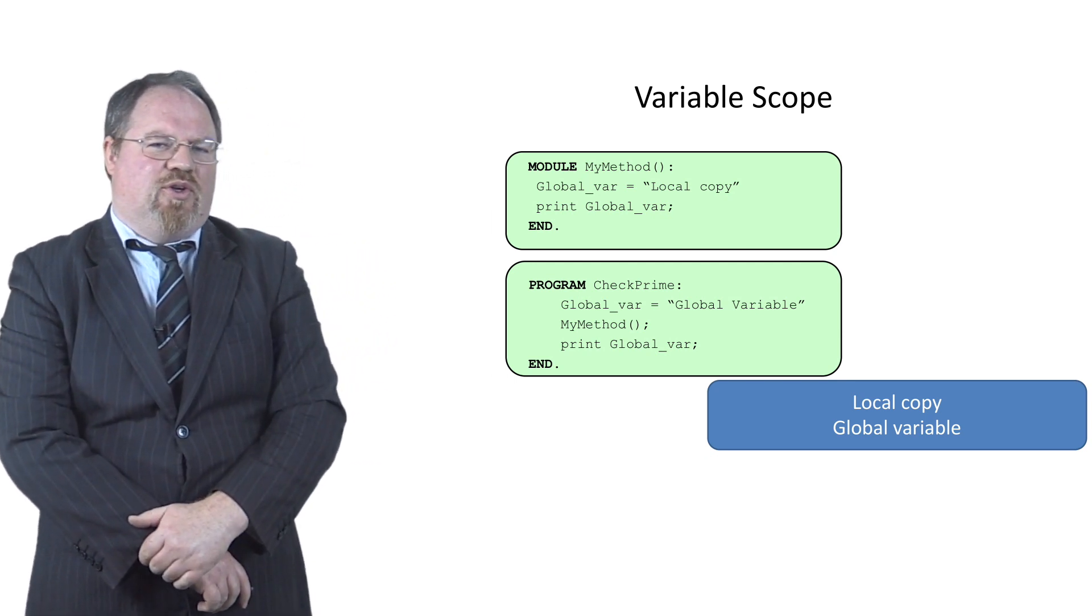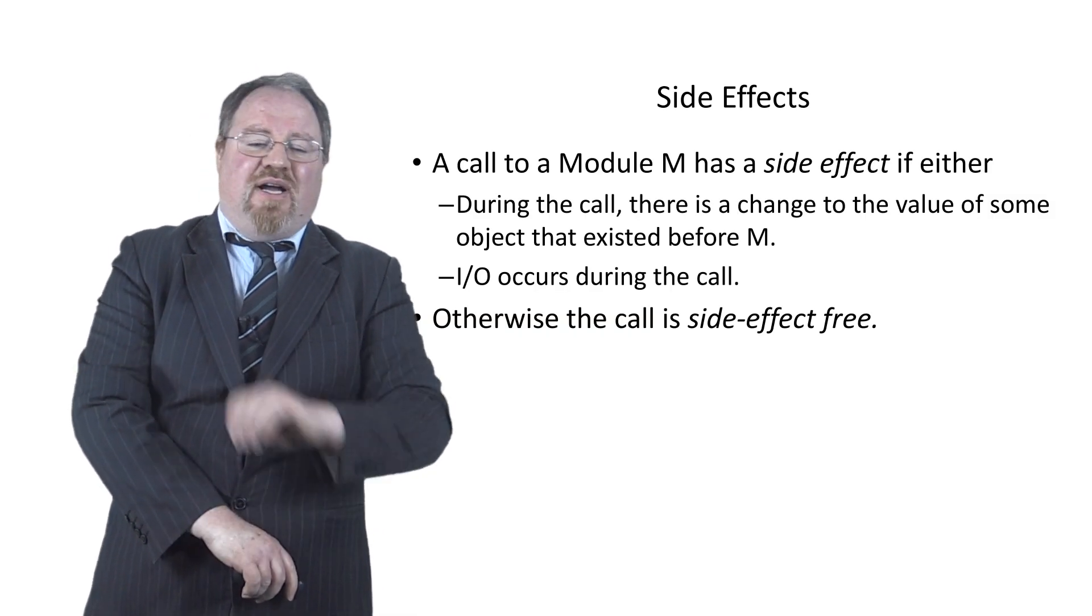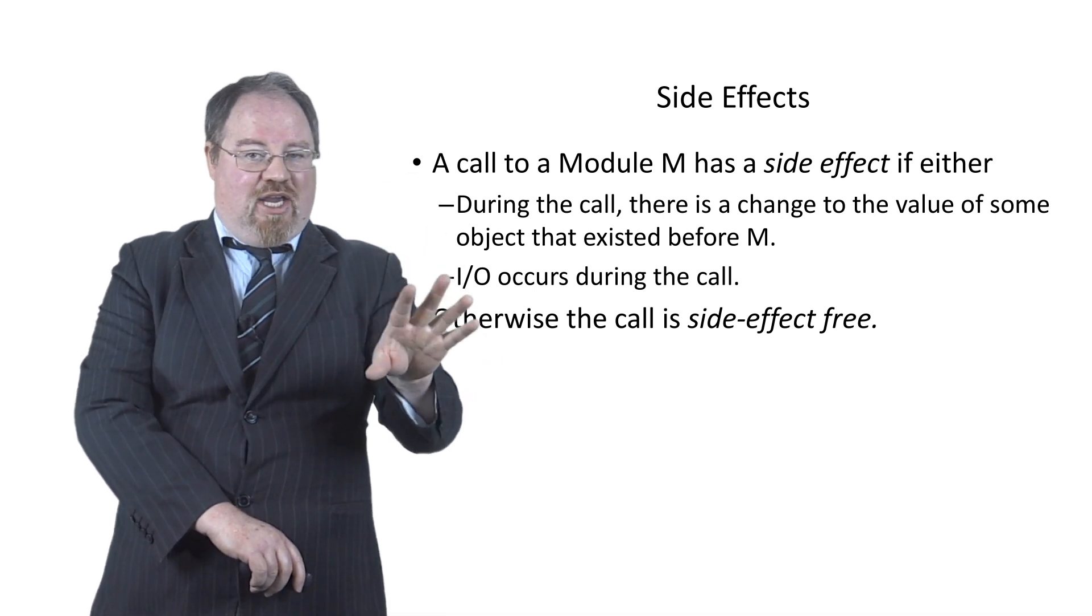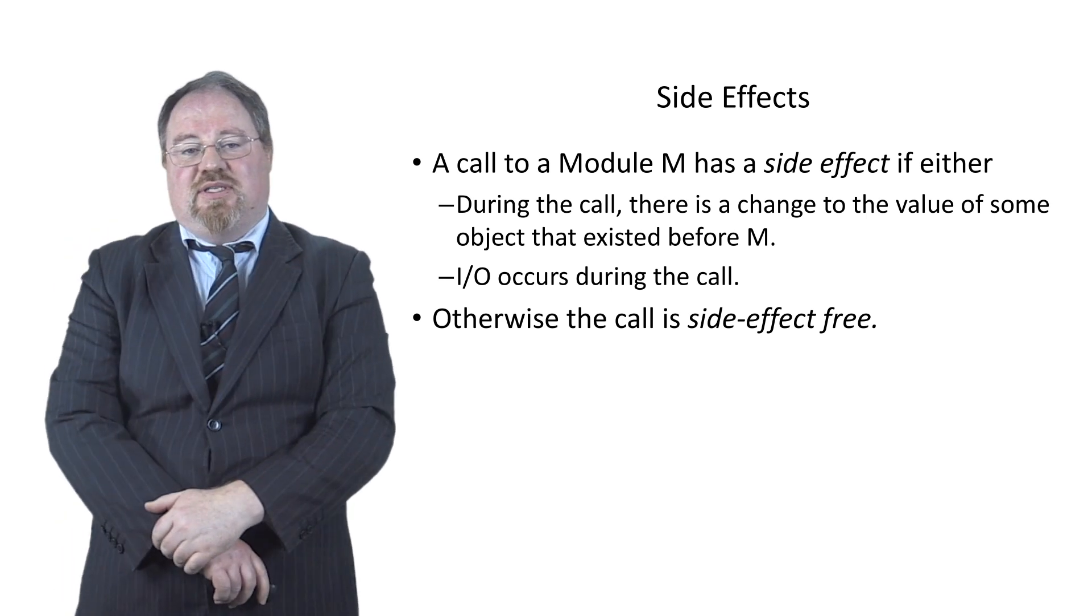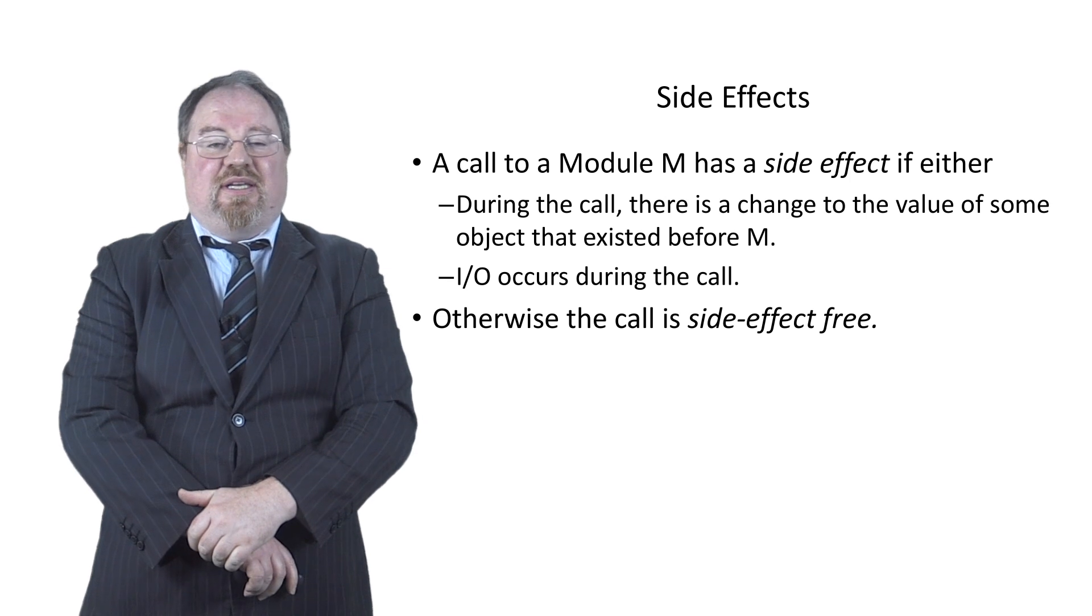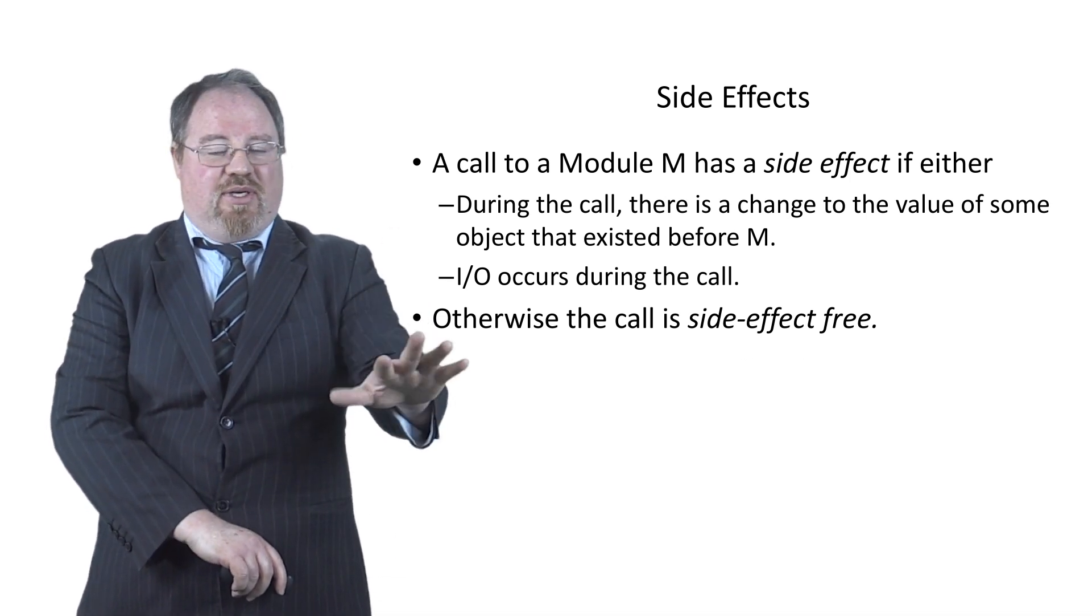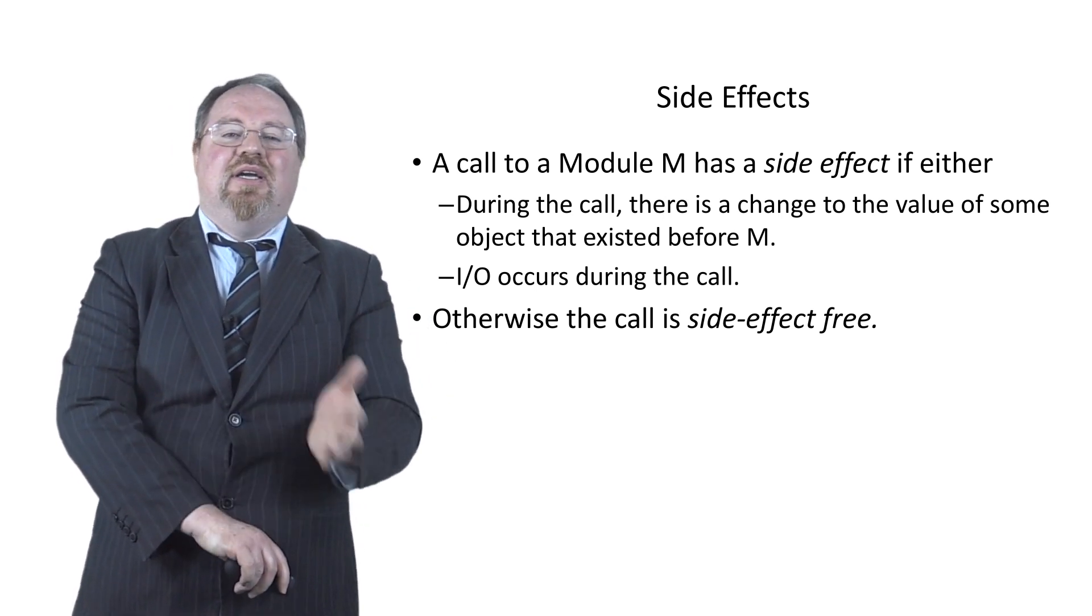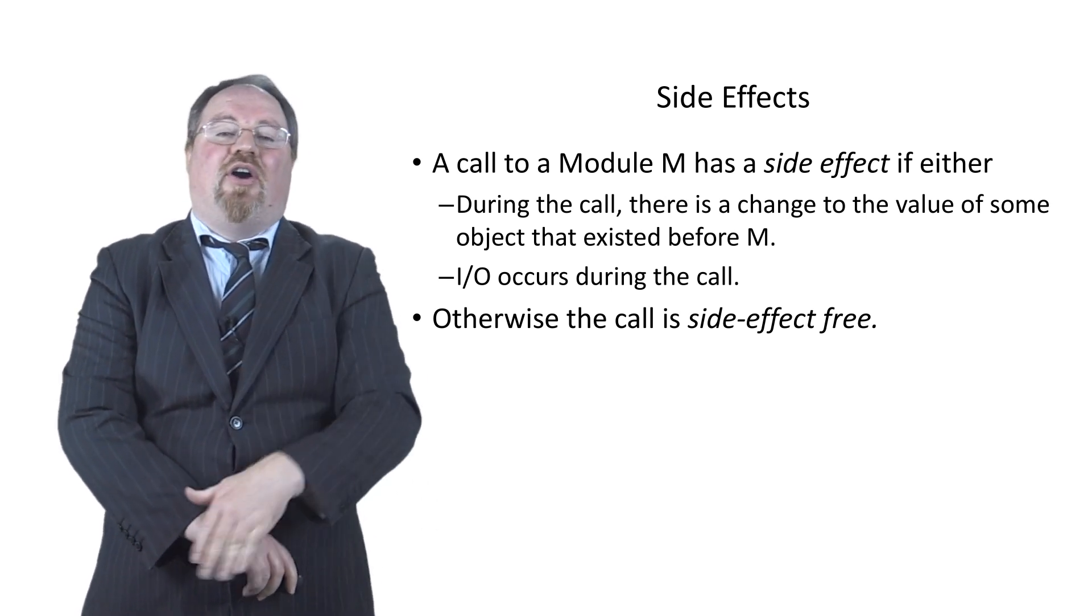I'll just add one note as well, there's terminology in modularization which we call a side effect. So a side effect occurs if during a call to a module, the value of some object changes as a consequence of that call, or some input output occurs as a consequence of calling a module. We like modules that are side effect free, that doesn't change anything, that when you call the module, it does whatever it does and then returns back and leaves everything in the state it was. But we define certain modules as being either having side effects or being side effect free.